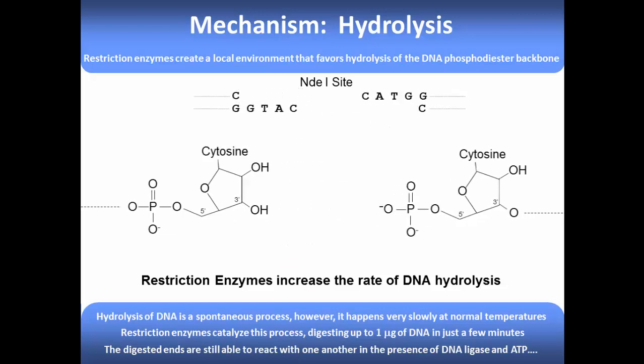Once NDE1 binds to the DNA, it creates a local environment that favors hydrolysis of the phosphate backbone. Once NDE1 has cut both sides of the DNA, the strands may be separated. This reaction results in a five prime phosphate and a three prime hydroxyl group on the opposing strands of DNA. We will use these groups later in our ligation reaction to join new pieces of DNA together.